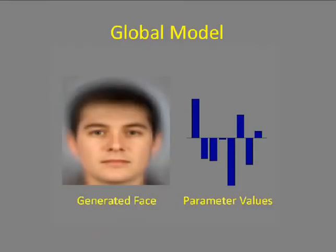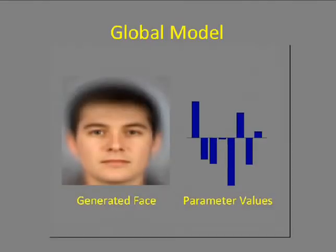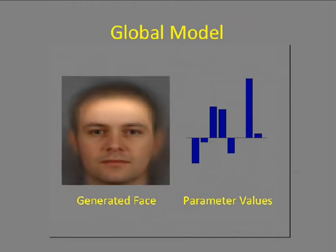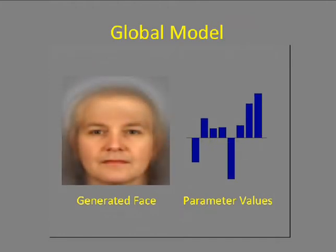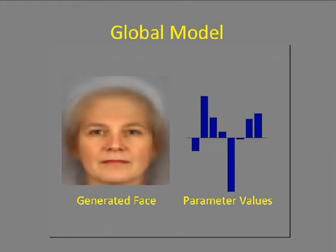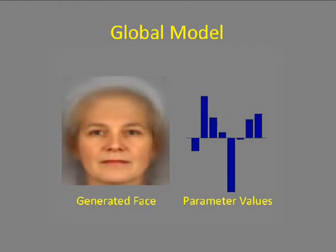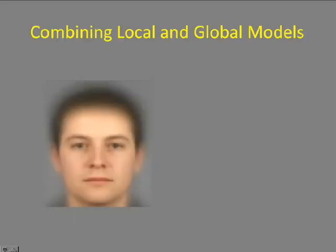To solve this problem, we consider a second model with complementary properties. We build a global model of the image pixel covariance, which relies on only a few parameters. Here you see the parameters varying and the resulting face changing. These images do not have realistic looking texture, but at least they are globally coherent.